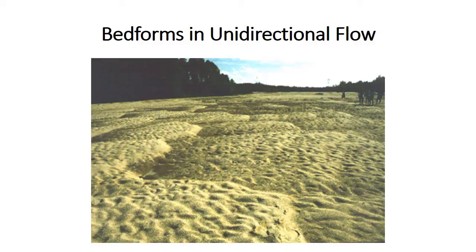Bedforms are the three-dimensional features developed on the bottom of a moving flow. They are extremely important because their formation relates to specific conditions of water flow and grain size. More importantly, they leave behind sedimentary structures that we'll be able to use to infer depositional conditions in ancient environments. These slides introduce the most important types of bedforms found in unidirectional water flow — extremely important indicators in fluvial environments, but they can form in any environment, even in the ocean where water flow is unidirectional.